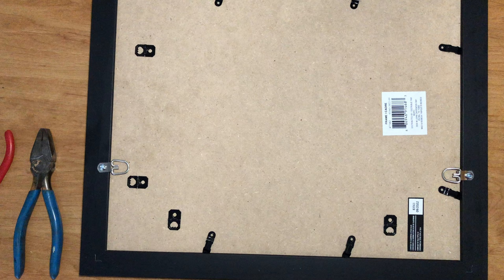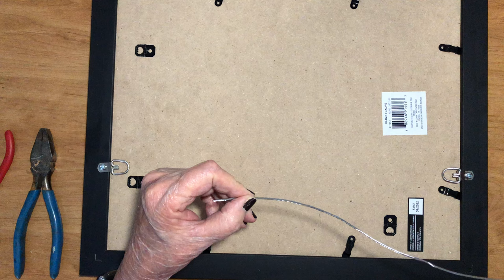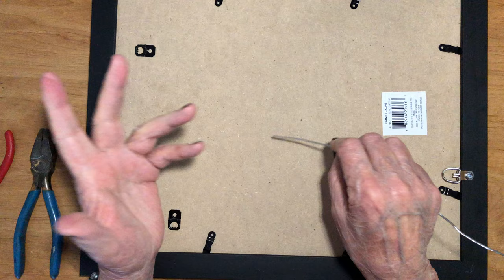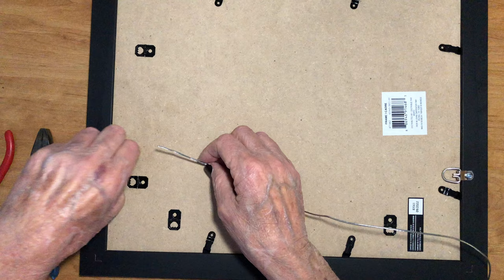What I wanted to do is show you how to string the wire. The wire that I use is a number five. It's a maximum picture weight of 43 pounds. This is not 43 pounds, so I can go bigger with this, but I just do this for stability.